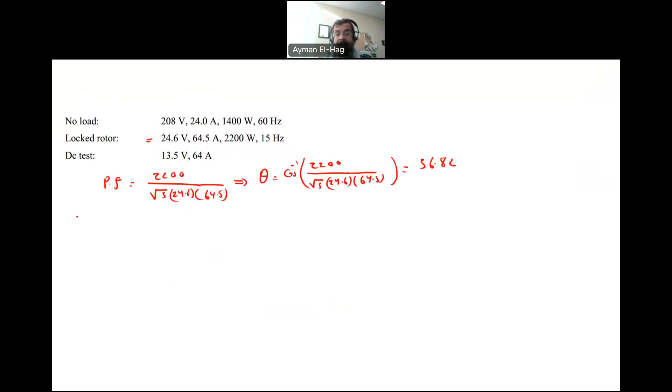Now we want to find the real part. We know Z from the previous calculation equals 0.22 ohm. My total R, which is R1 plus R2, will equal 0.22 times cosine of the power factor angle 36.82. From this, R1 plus R2 equals 0.176 ohm.